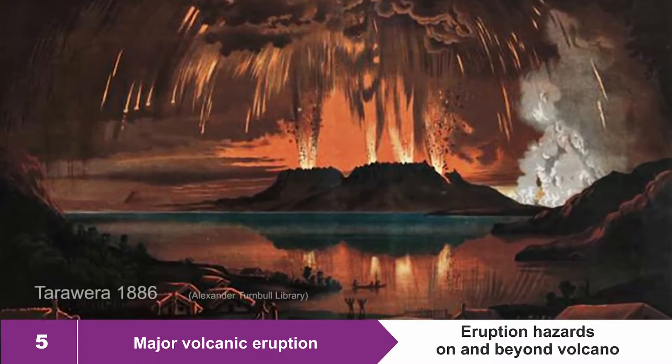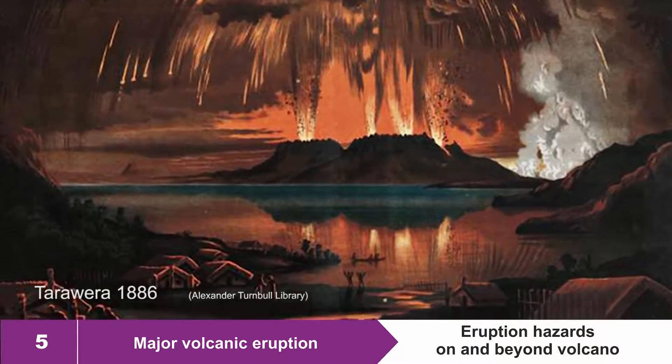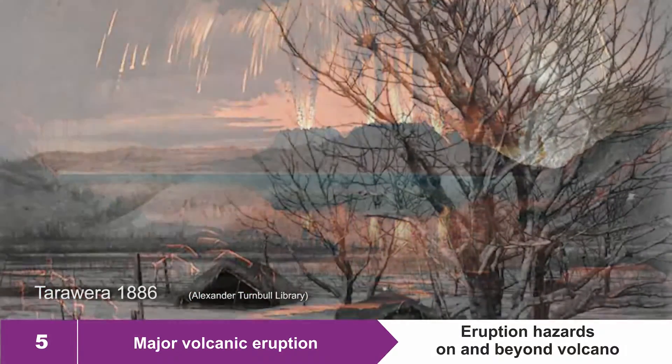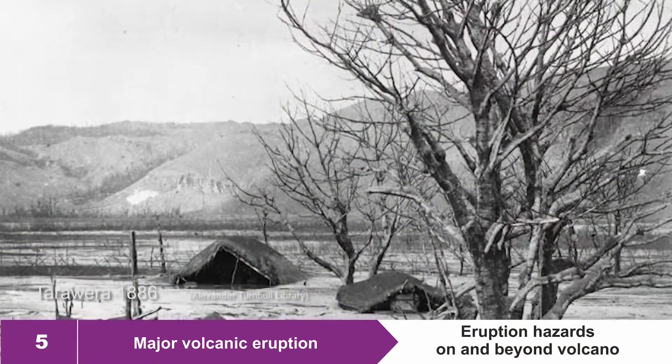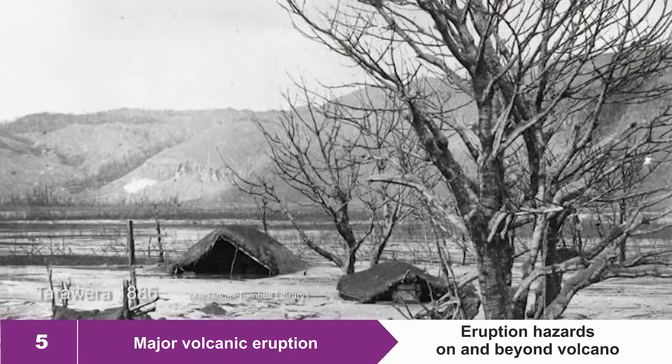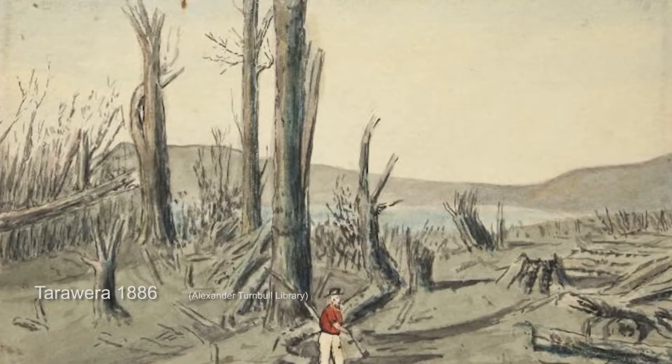Volcanic alert level five is a major volcanic eruption where we have significant hazards on the volcano that could be affecting communities well away from the volcano.